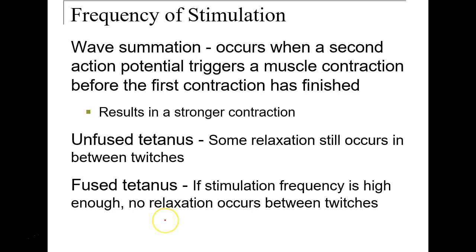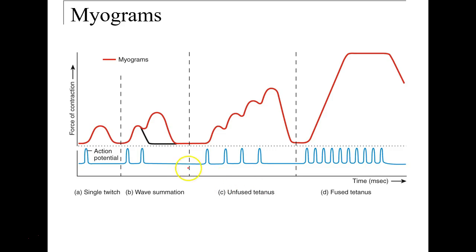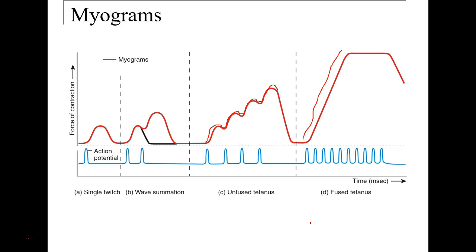Fused tetanus: there is no relaxation between the twitches. Here we see one action potential producing a single twitch, two action potentials adding together as wave summation, then unfused tetanus with continual contraction and some relaxation. With fused tetanus, multiple action potentials arrive close enough together that the muscle never relaxes, causing it to stay in continuous spasm until the action potentials cease.